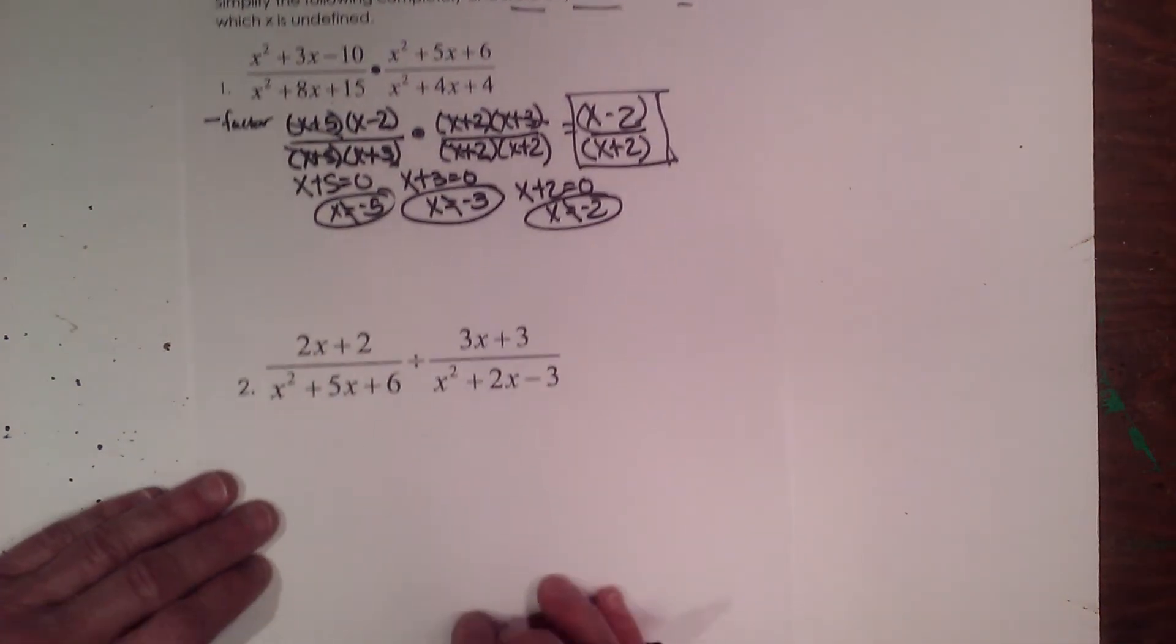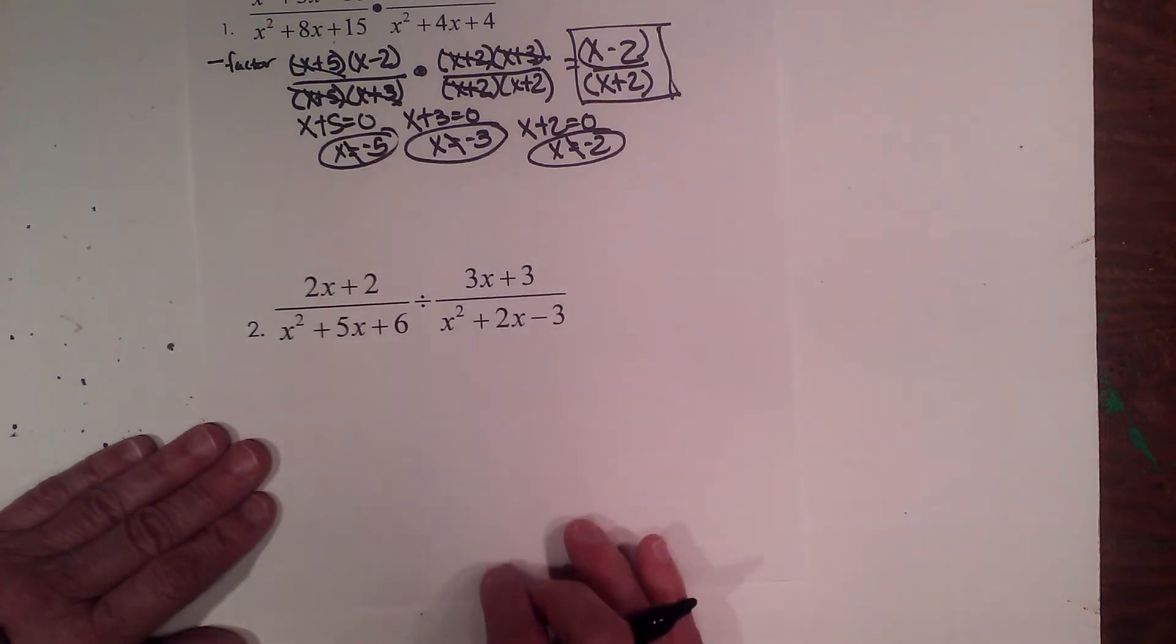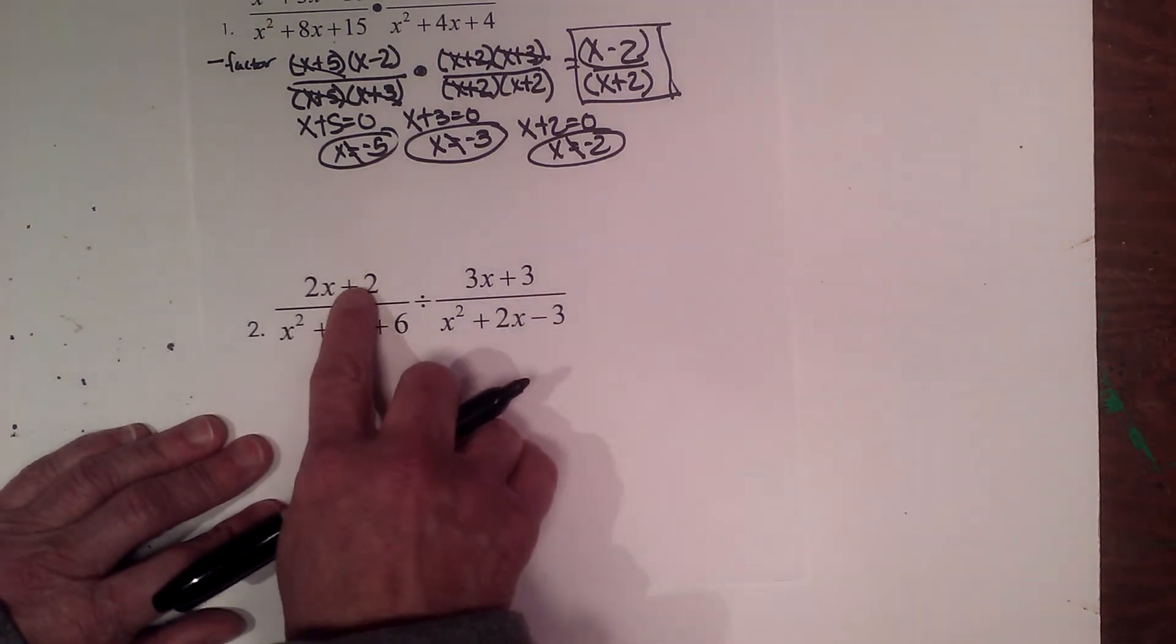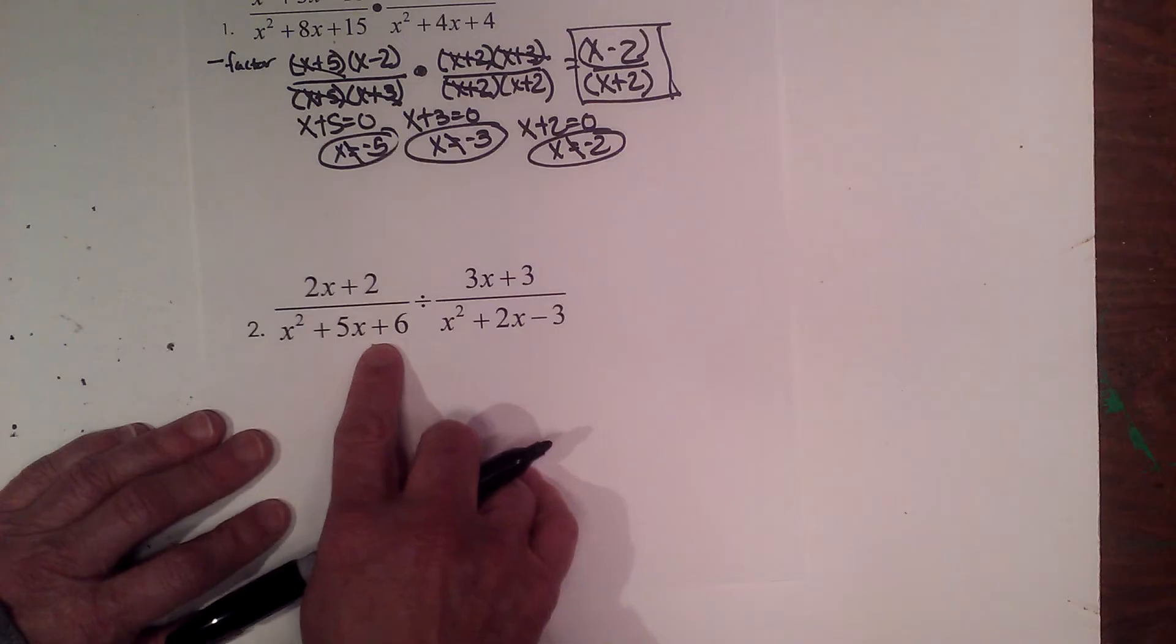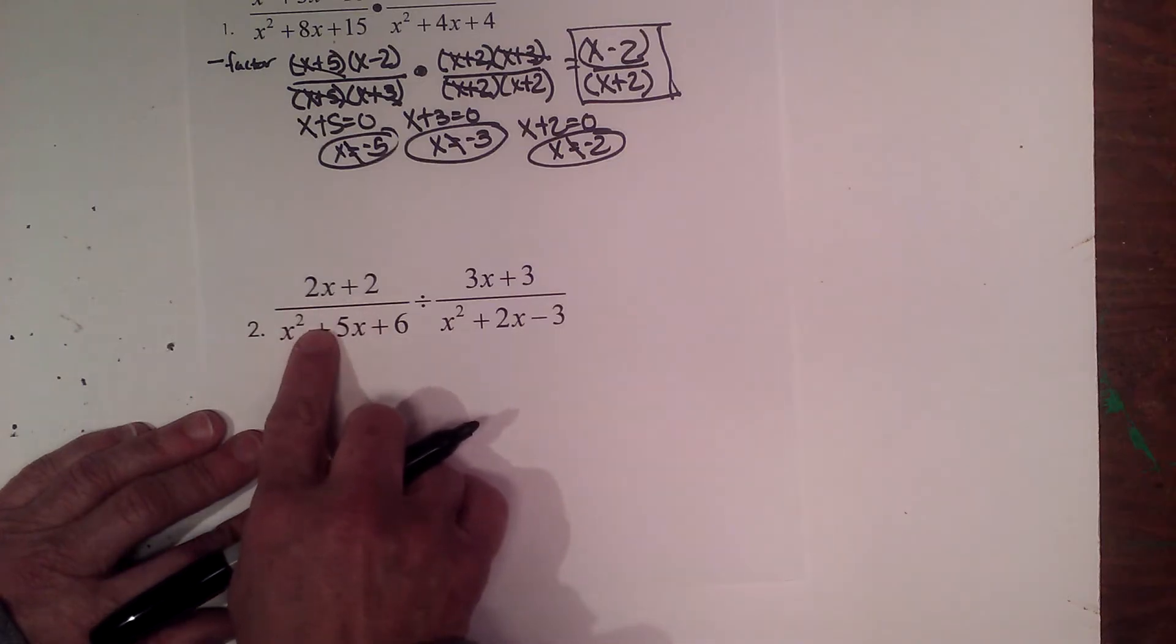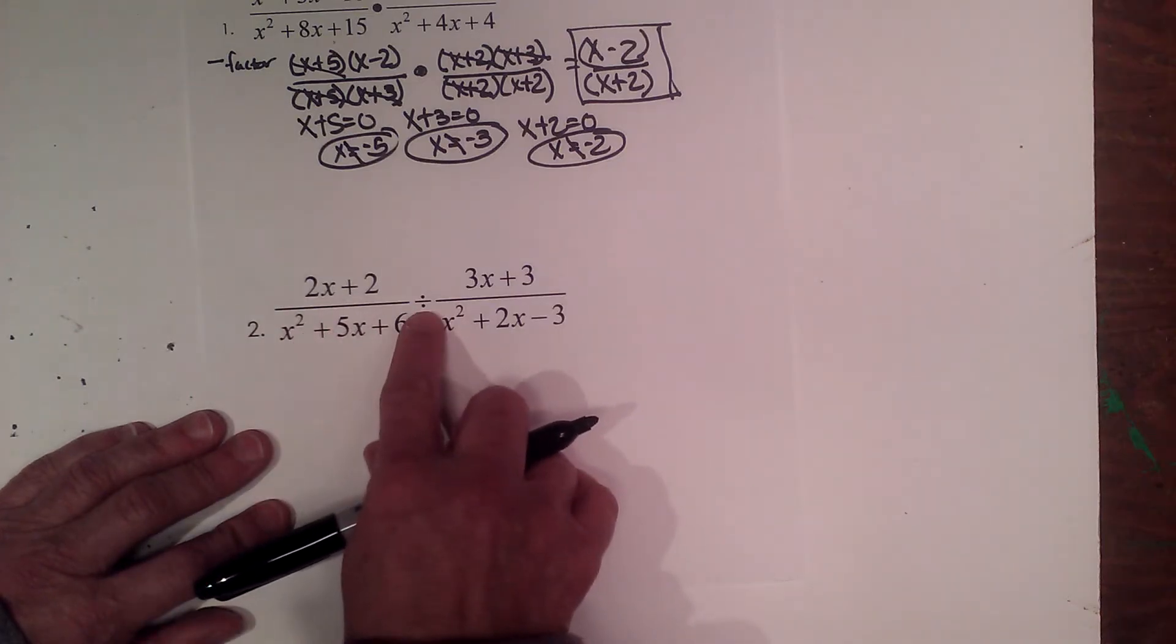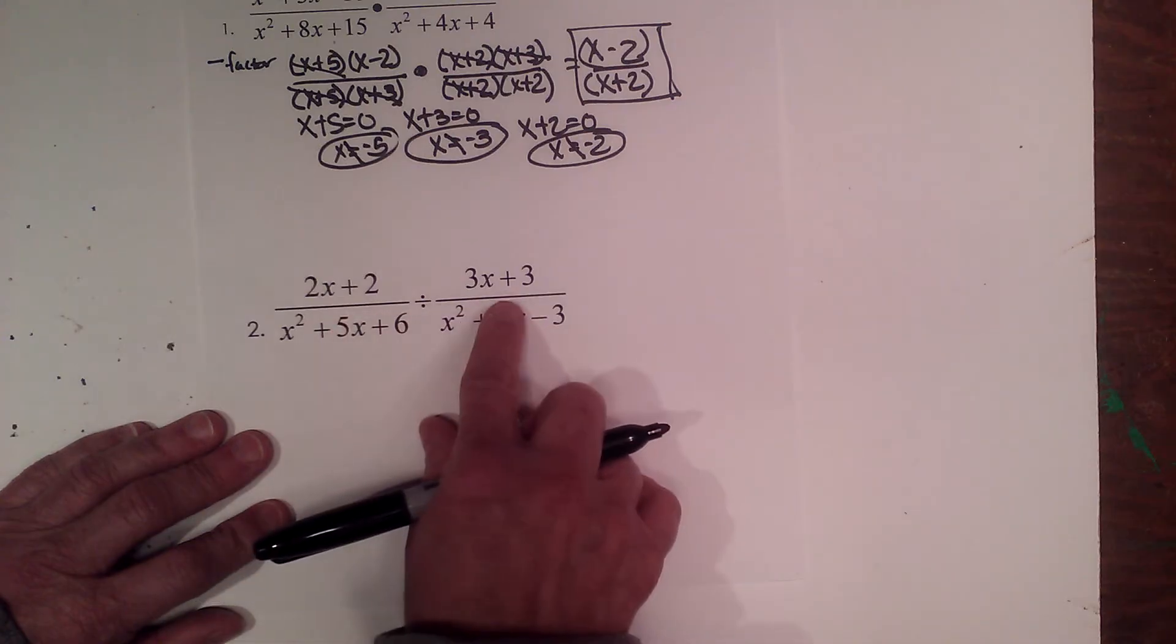So let's try one more of these. But this time we're going to look at division. So we're going to use the same process. We're going to factor, and we're going to cancel. But since this is division, what I have to do is I have to keep, change, flip. Take my second fraction and flip it around.